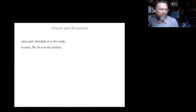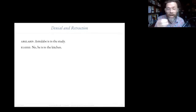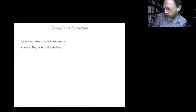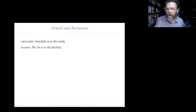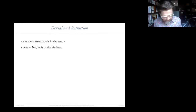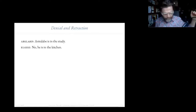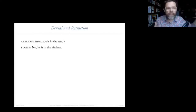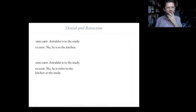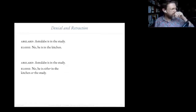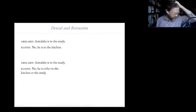Now I'm going to use these ideas to examine the relationship between denial and retraction, because this has been taken by Imogen Dickey and others who've been a bit critical about the line run in 'Multiple Conclusions.' They've asked: does every time I say 'no' in response to something count as a denial? For example, look at this dialogue. Abelard says 'Astrolabe's in the study.' Eloise responds 'no, he's in the kitchen.' It's very plausible to think that this 'no' is expressing a denial of what Abelard has said.